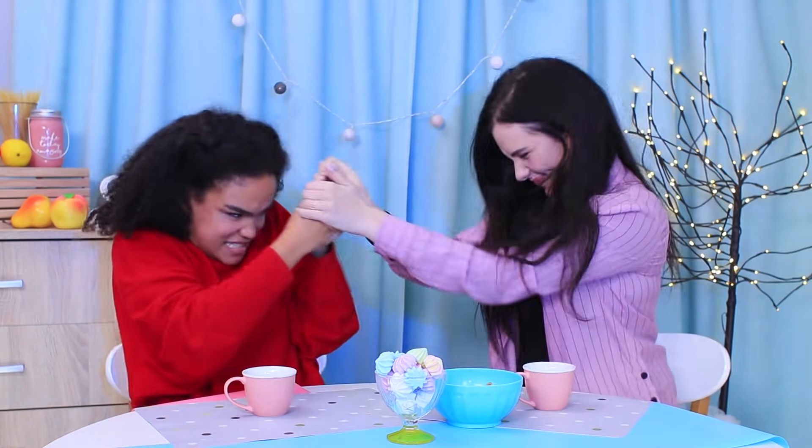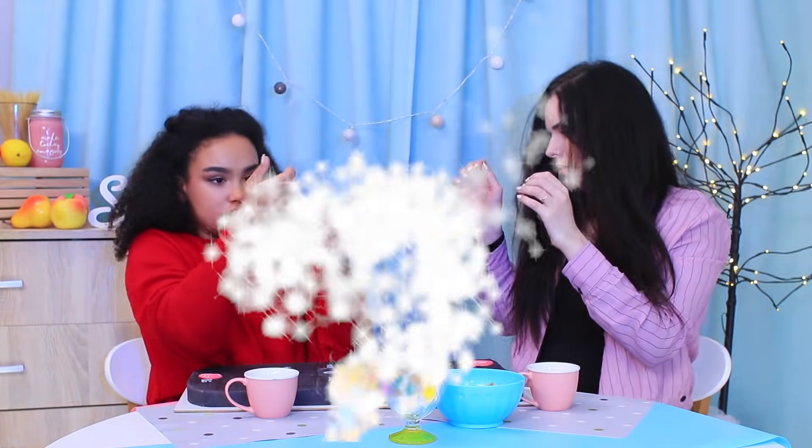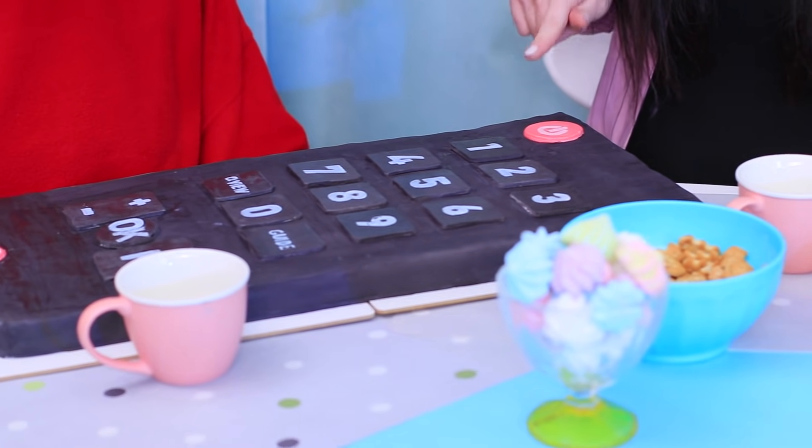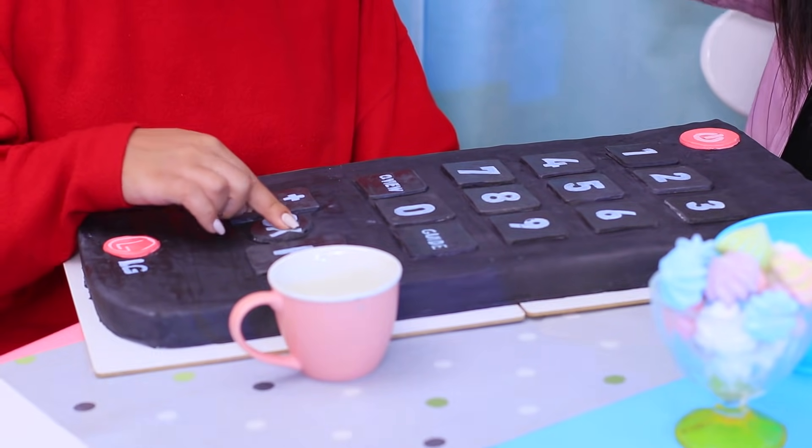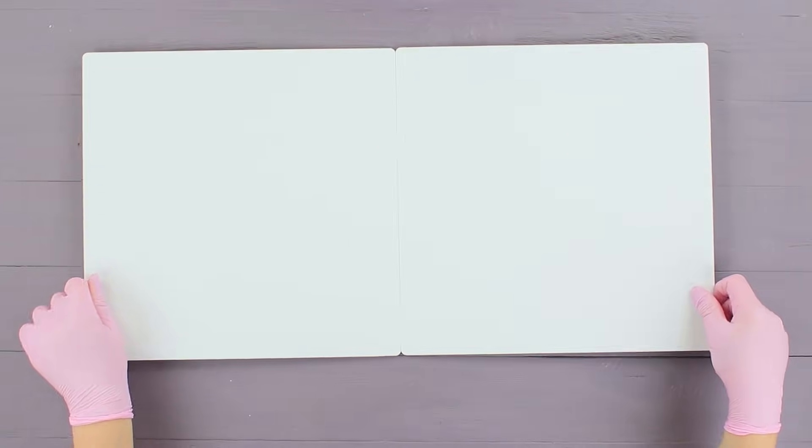The girls are watching TV. And as always, they can't agree on the channel. Jessica wants to watch a TV show and Vicky prefers the news. A cruel fight for the remote control starts. But Fairy quickly solves the problem. She turns the remote control into a common dessert. Glue two square boards together.